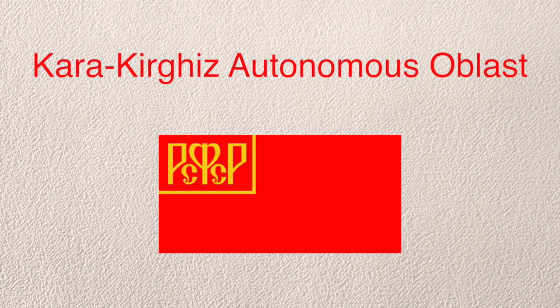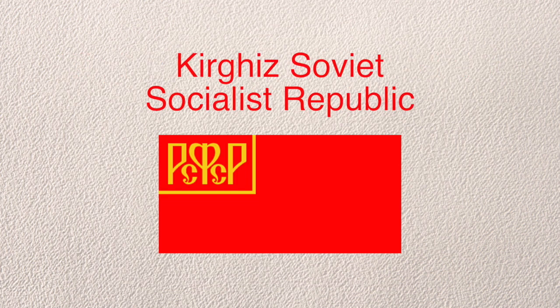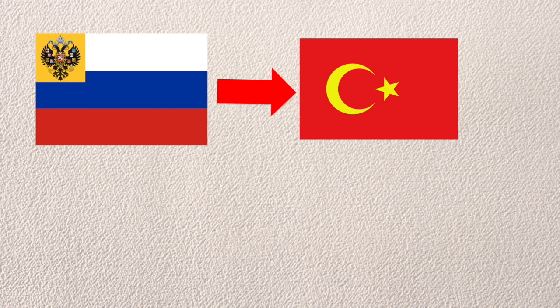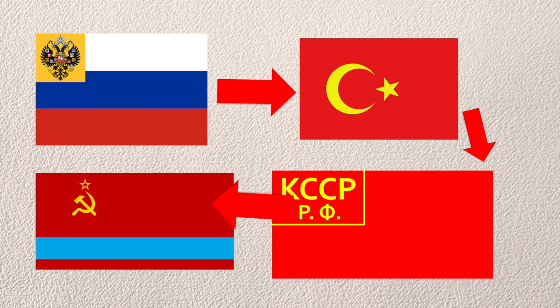Then there is also the Kara-Kyrgyz Autonomous Oblast, which becomes the Kara-Kyrgyz Autonomous Oblast, which becomes the Kyrgyz Autonomous Socialist Soviet Republic, which becomes the Kyrgyz Socialist Republic — now a part of the USSR and secretly Kyrgyz. But we still have one more left: Kazakhstan, which was in the Russian Empire, briefly had independence as the Alash Autonomy, then back to Soviet Russia as the Kyrgyz ASSR, then renamed the Kazakh ASSR, then joined the USSR as the Kazakh Soviet Socialist Republic.